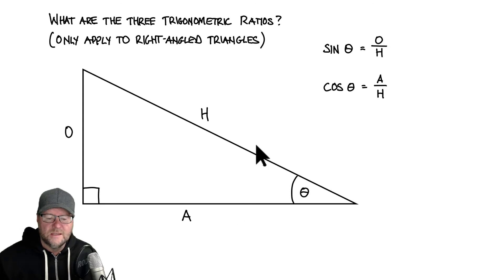Cos of the angle theta equals the adjacent over the hypotenuse, so whatever the length of A is, you put it over H and you're going to get a number. And finally, the third one is tan of our angle theta. So tan of theta equals opposite over adjacent, and that is it.